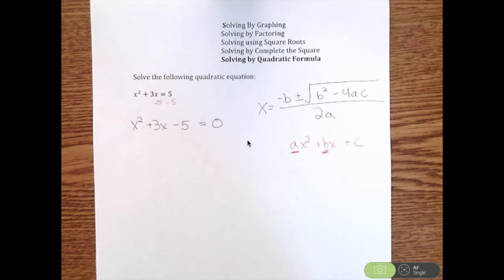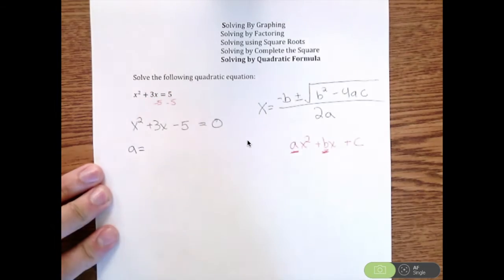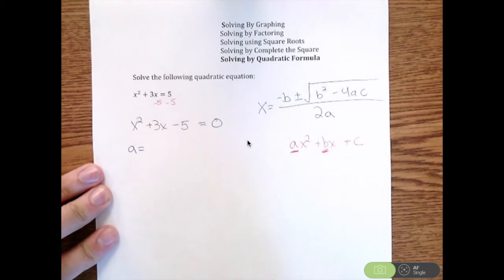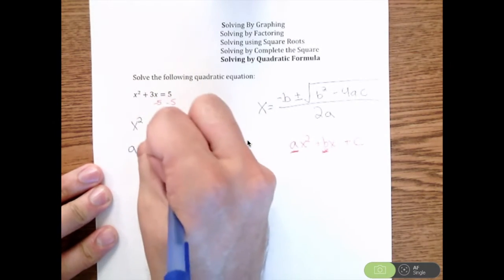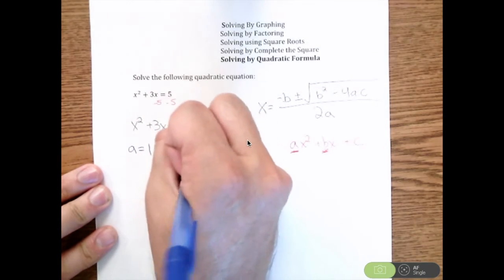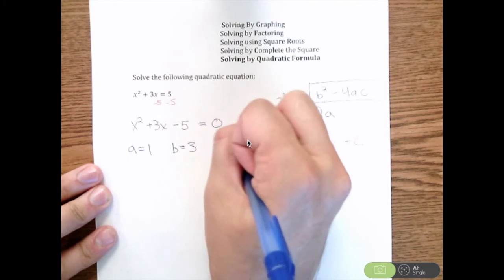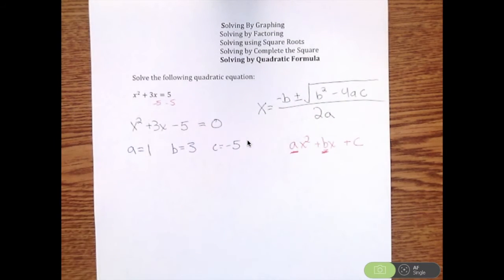So in this problem, I usually write out what a, b, and c are before I plug into the quadratic formula because it makes it a lot easier. In this problem, a is the coefficient in front of x squared, which is 1. b is 3, and c is negative 5.